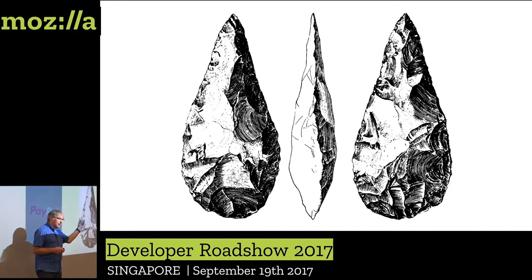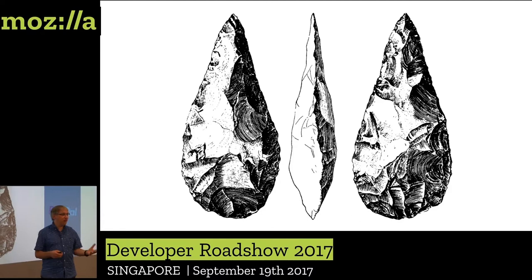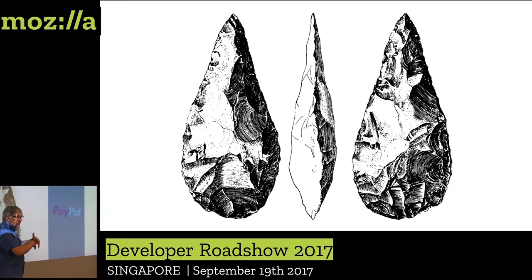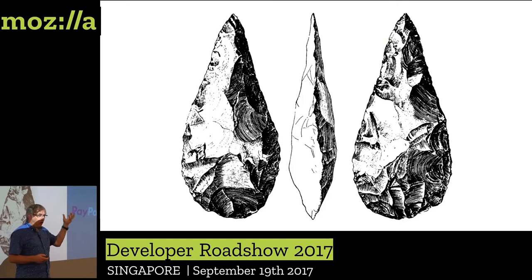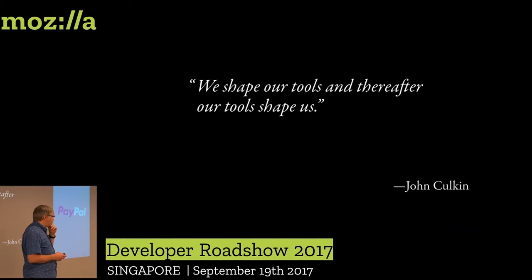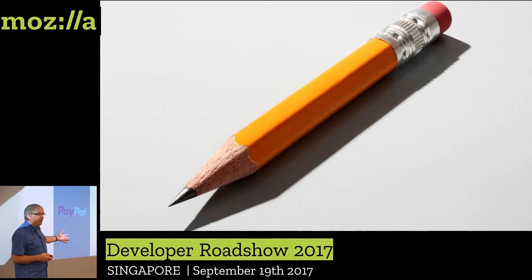Instead of waiting and selecting for errors to evolve, say, a sharp cutting tool at the end of a limb, we instead create a sharp cutting tool and we augment ourselves with this technology. This is an early example of technology in a Acheulean hand axe, and these were all over the planet for many thousands of years. We were able to augment ourselves — we shape our tools, and then the tools shape us. And that's pretty much been the story of technology ever since.